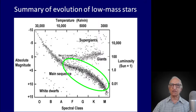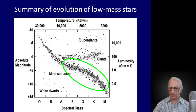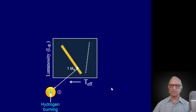Before we do that, let us very quickly recall the main results of our earlier discussion concerning the evolution of low mass stars. These are the low mass stars. The Sun is somewhere over there — one solar luminosity and a surface temperature of about 6000 degrees. Let us quickly summarize everything we discussed in the previous lecture with the help of this one single slide.